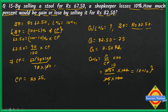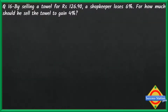We got our answer easily. Now let's move to the next question. By selling a towel for rupees 126 and 90 paise, a shopkeeper loses 6%. So this relates to the previous question — selling price is given, loss percent is given. The question asks: for how much should he sell to gain 4%? So gain percent is given as 4% and we need to find the selling price.